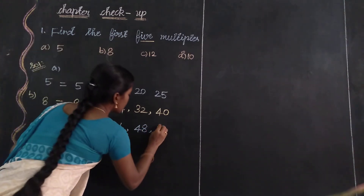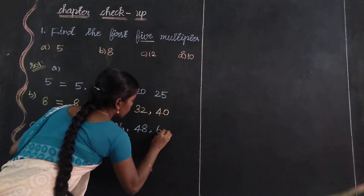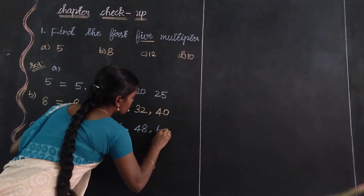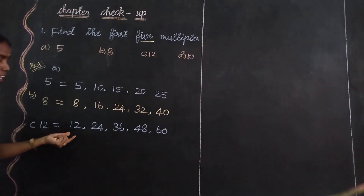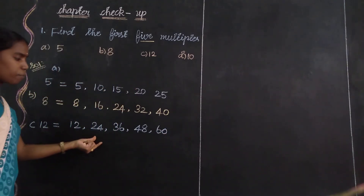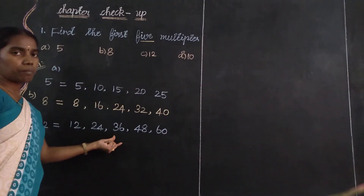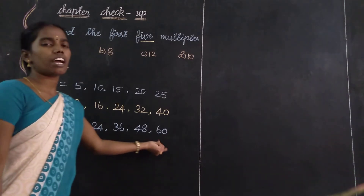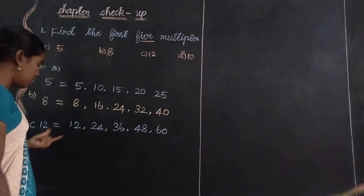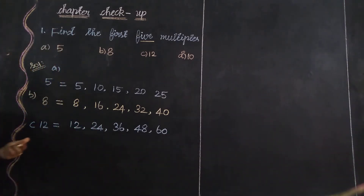5 times 12 is 60. So the first 5 multiples of 12 are: 1 times 12 is 12, 2 times 24, 3 times 36, 4 times 48, 5 times 60. It is a 12 digit.